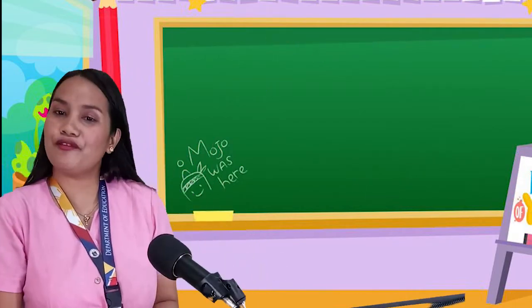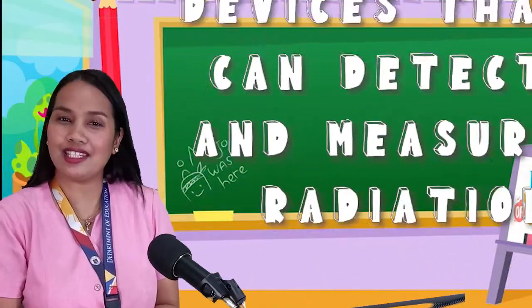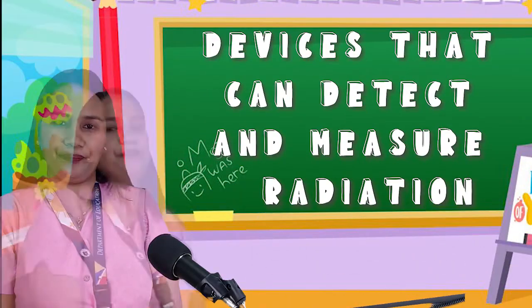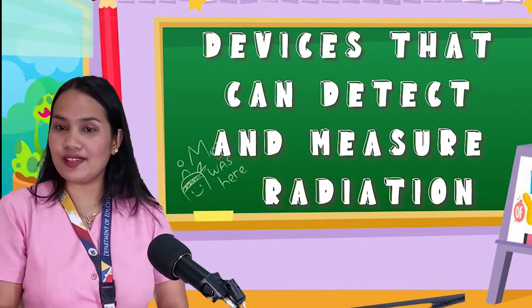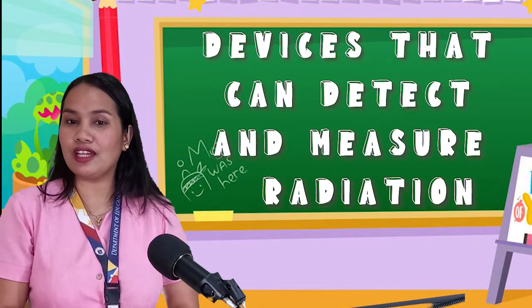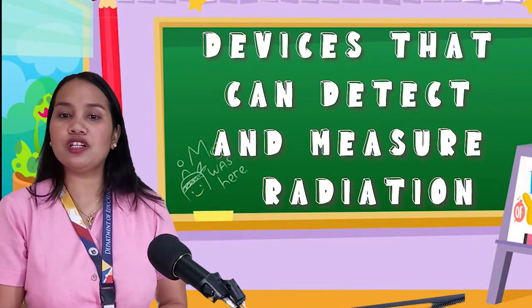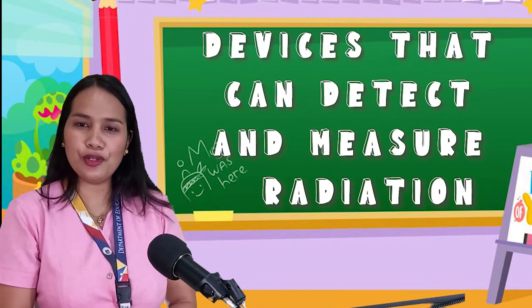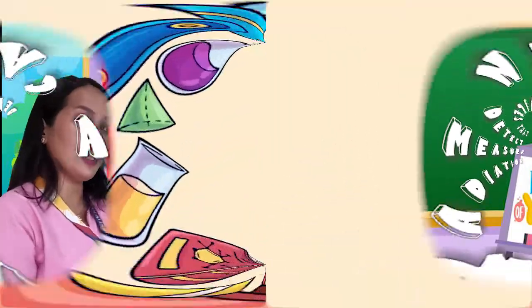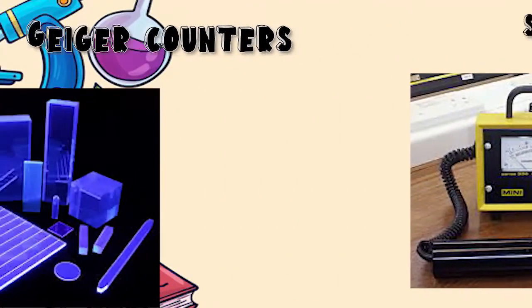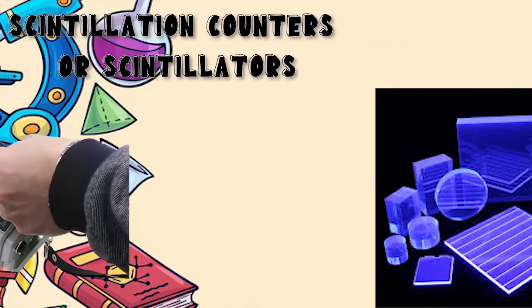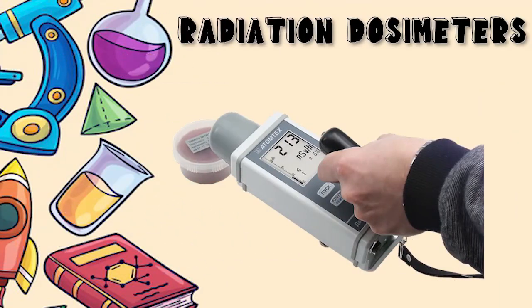What are the devices that can detect and measure radiation? Several different devices are used to detect and measure radiation, including Geiger counters, scintillation counters or scintillators, and dosimeters.